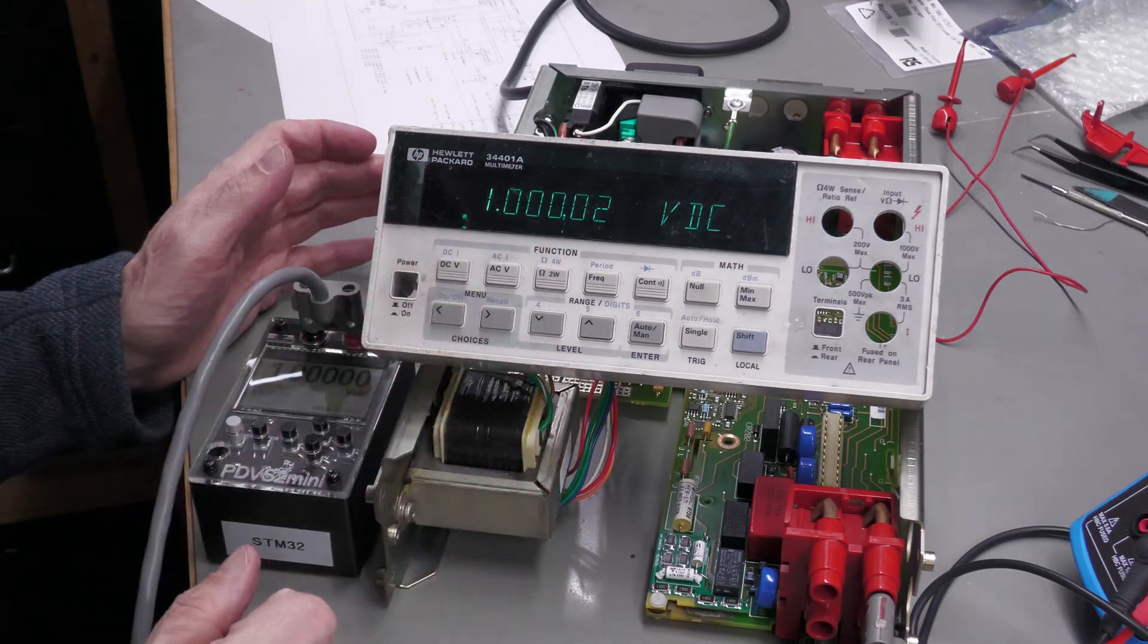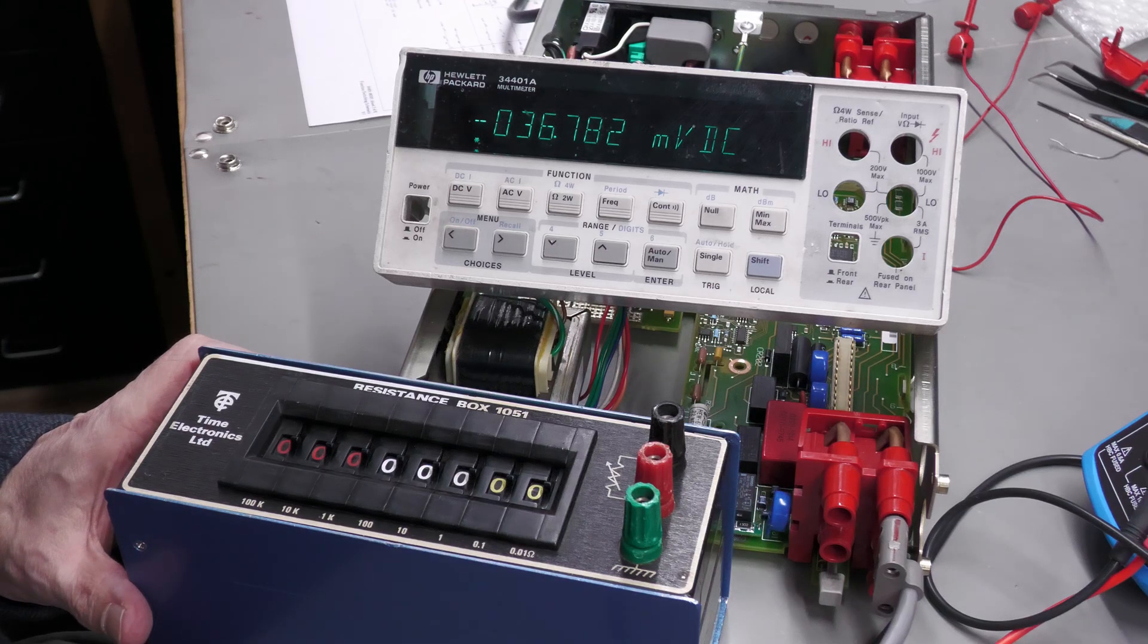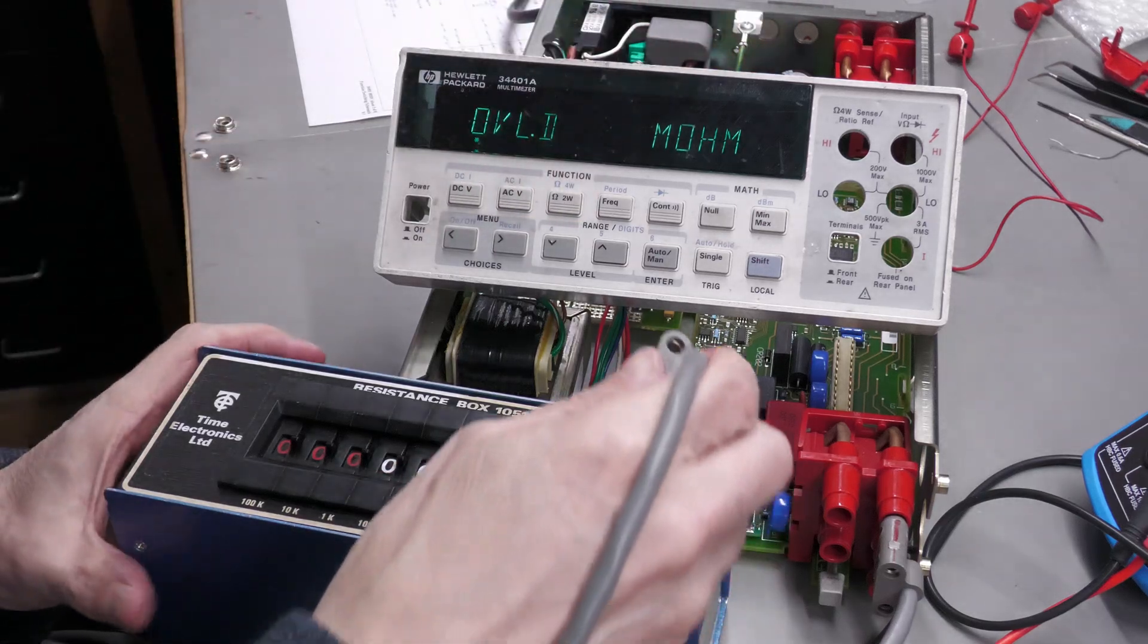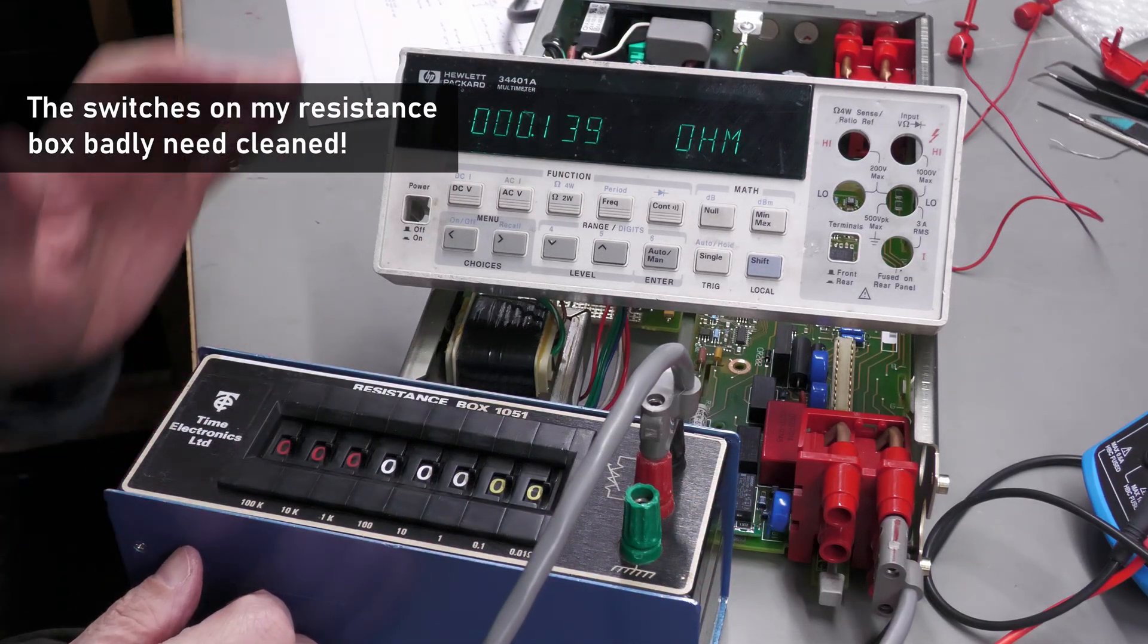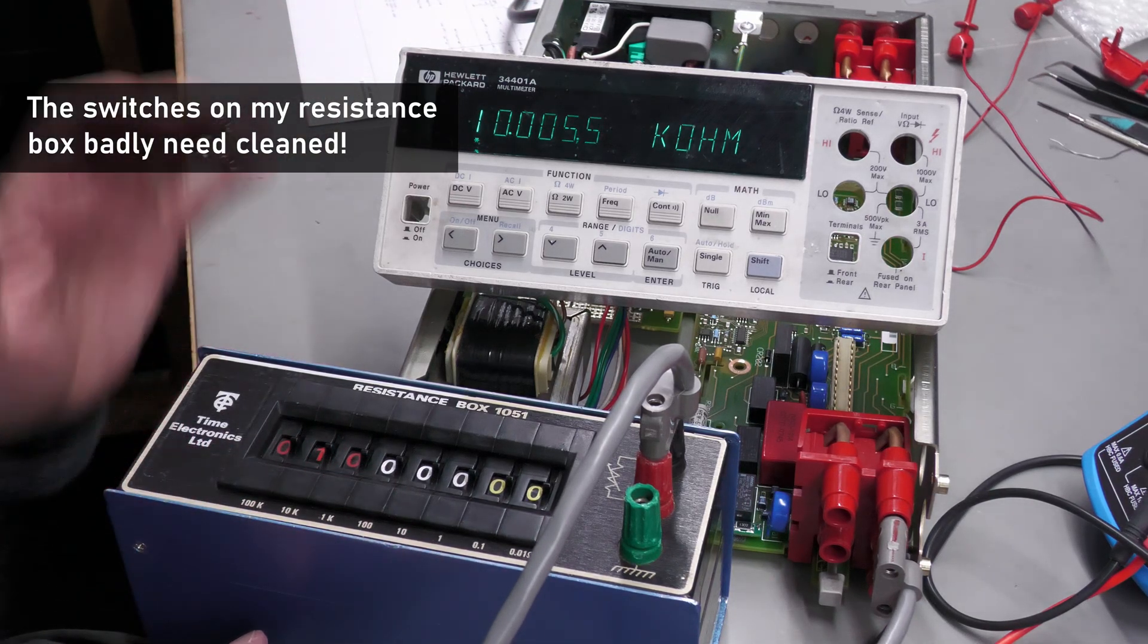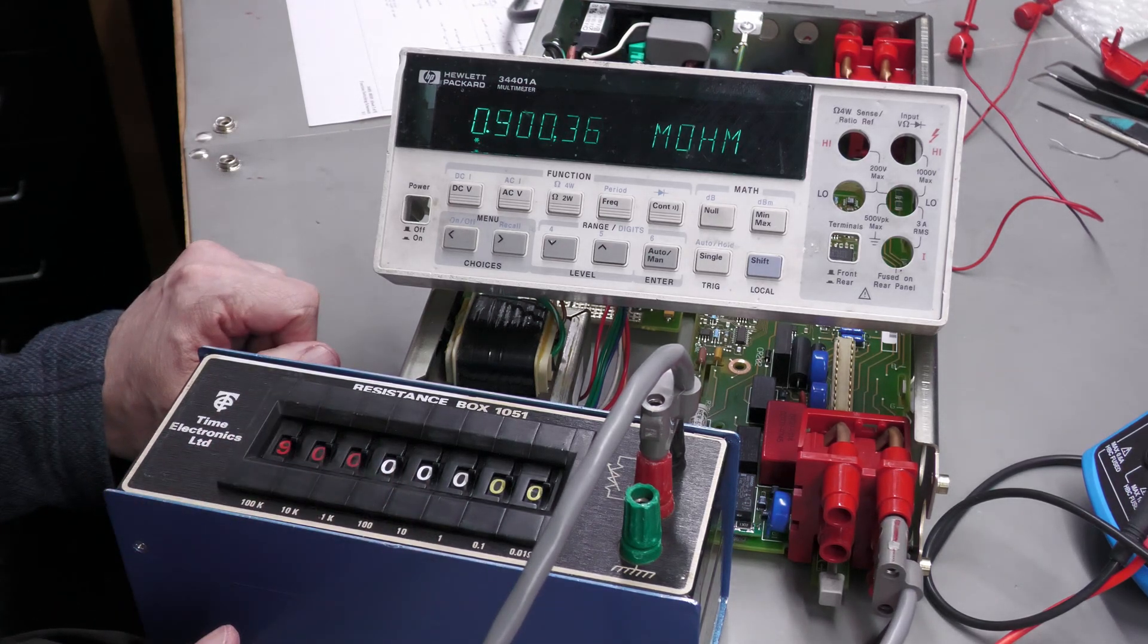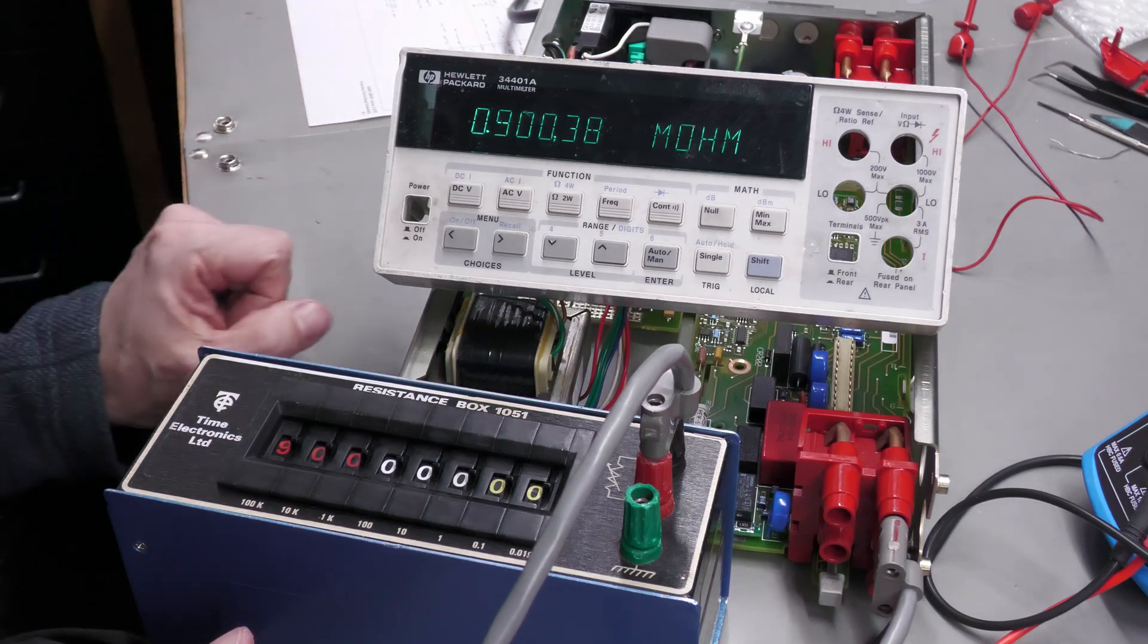Now I want to try resistance mode as well. Okay, let me try my resistance box here. Put it in two wire mode. Dead short. Yes, 0.1 of an ohm. Let's just go to 10k. Yes, that's working as well. Wow. 900k. Yes, 0.9 of a mega ohm. Resistance mode is working.